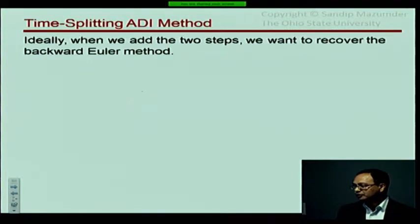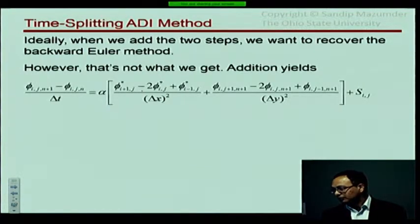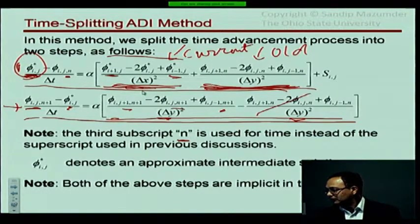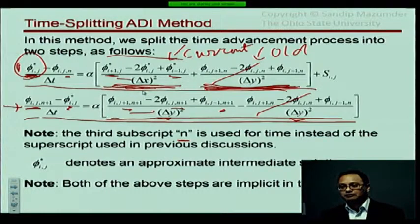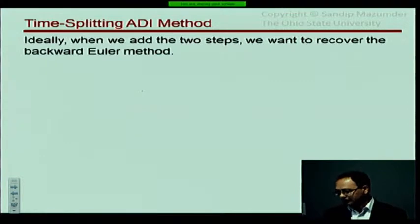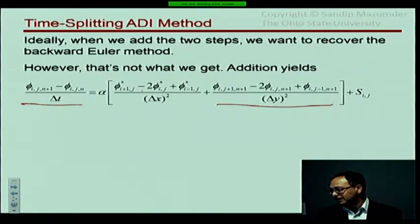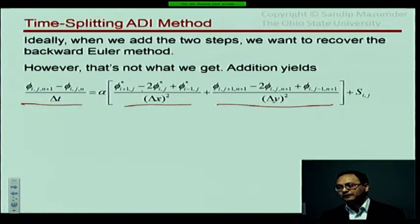Mathematically, if we add the two equations, we should recover the backward Euler method. When you add them, certain terms cancel out—this term and that term cancel, giving the sum of derivatives on the right-hand side. On the left-hand side, we recover the backward Euler time discretization. However, the x-derivative still contains phi-star rather than n+1, introducing an error.